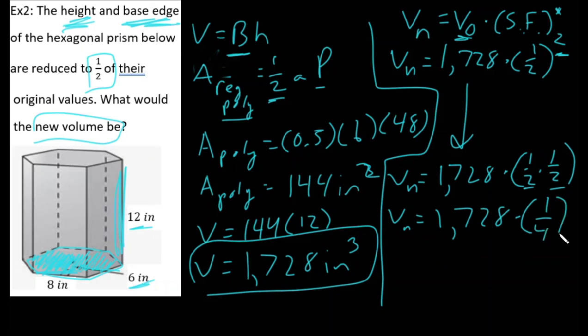So if we want to figure this out, we have to multiply 1,728 times one-fourth, and that comes out to be actually a pretty nice number. Our new volume is 432 inches cubed, or one-fourth of the original volume. Alright, well thank you all so much.